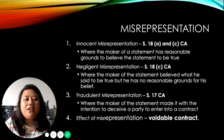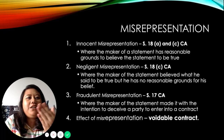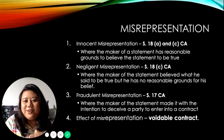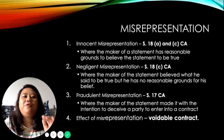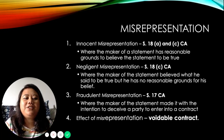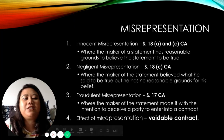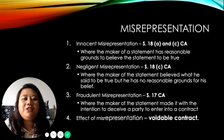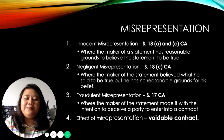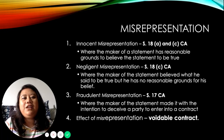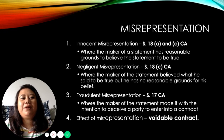Negligent misrepresentation is when someone tells you something they believe to be true but has no grounds to believe it — they think they are right but they are just guessing. For both innocent and negligent misrepresentation, the effect is a voidable contract, same as for fraud. If you were told an untrue statement that made you enter into a contract, you can later challenge that contract on the basis of misrepresentation.